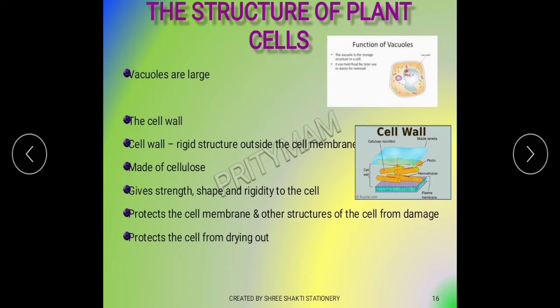Plant cells also contain some structures that are not found in animal cells. In plant cells we have chloroplasts, vacuoles, cytoplasm, golgi bodies, ribosomes, mitochondria, cell membrane, endoplasmic reticulum, nucleus, and nucleolus.